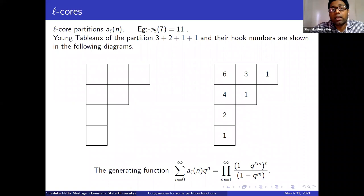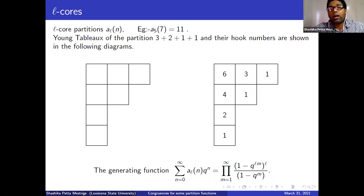In grad school, the first paper I read was Lushen Wang's result about congruences for five-regular partitions — a very nice result. Later in 2018, he proved congruences for seven-regular partitions. The other partitions I want to talk about are called t-core partitions. To define these partitions, I want to discuss Young tableaux.